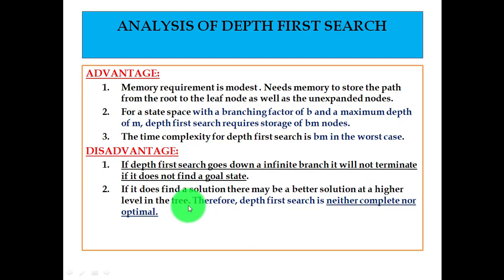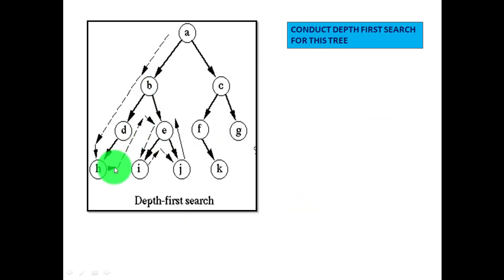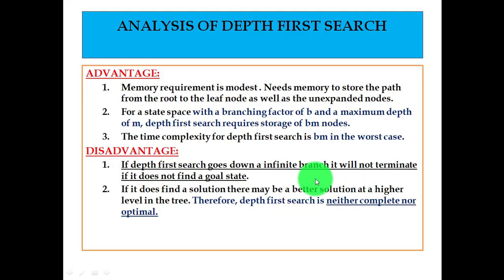Second: if it does find a solution, there may be a better solution at a higher level in the tree. Therefore, Depth First Search is neither complete nor optimal. It's considering this part, but suppose the solution is found in some other path. As it's considering one part at a time and goes on exploring it, it's not considering another part where there may be a better solution. So we cannot say Depth First Search is complete or optimal. It is not optimal because it's not giving you the optimal path. Depth First Search is neither complete nor optimal.